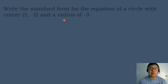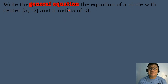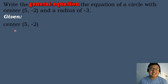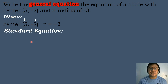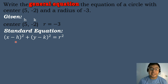Let's have our second example. Write the general form of the equation of a circle with center (5, negative 2) and a radius of negative 3. Let's list down the given. We have the center of the circle with coordinates 5 and negative 2, where the value of h is equal to 5, the value of k is equal to negative 2, and the value of the radius is equal to negative 3. To solve for the general equation, we must first compute the standard equation of the circle using the center-radius form: the quantity of x minus h to the second power plus the quantity of y minus k to the second power equals r to the second power.